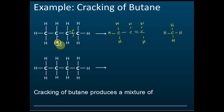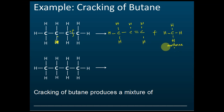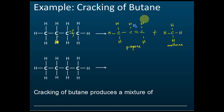The electrons combine to form a double bond. So the products are propene and methane. Cracking of butane produces propene, which is an alkene. It's a mixture of alkene and alkane, and the alkene can be separated from the alkane easily.